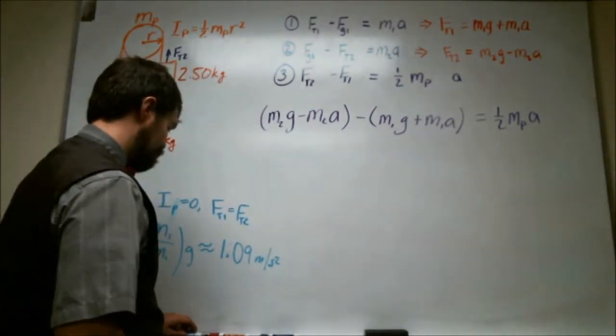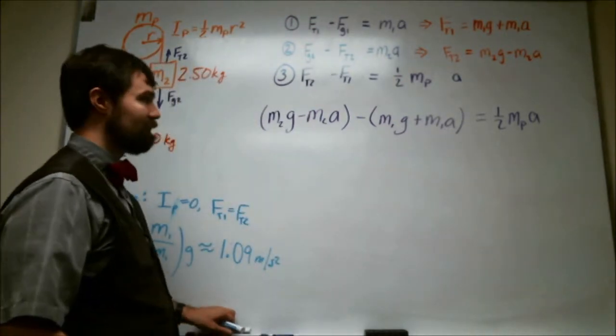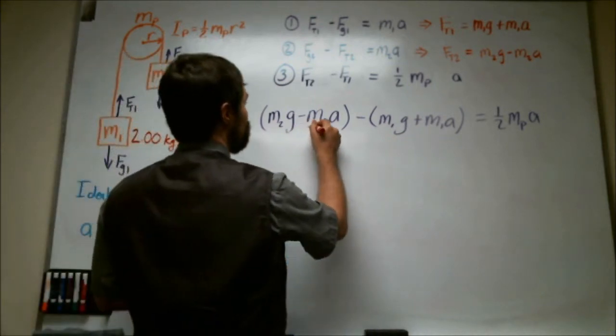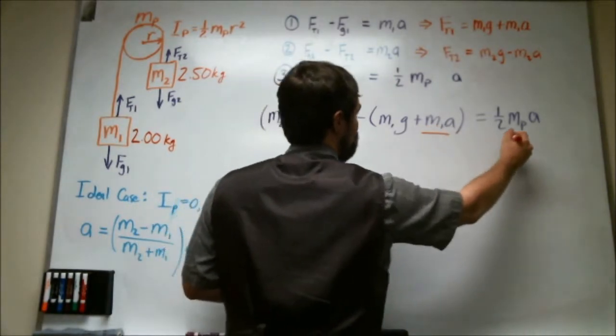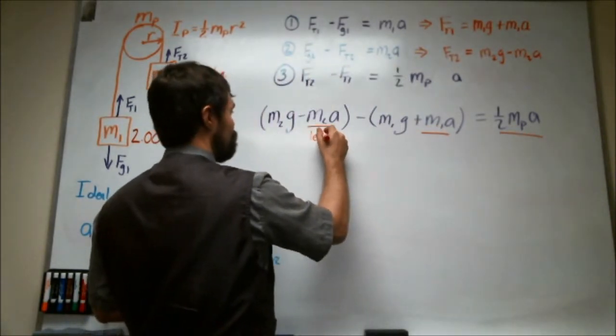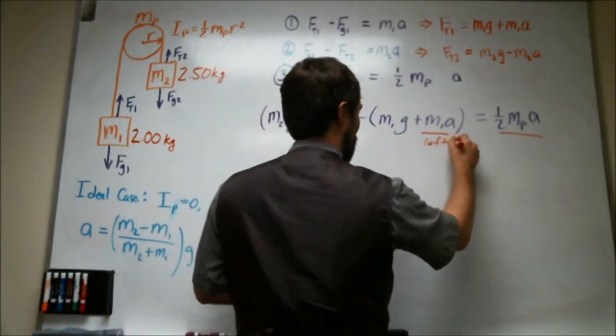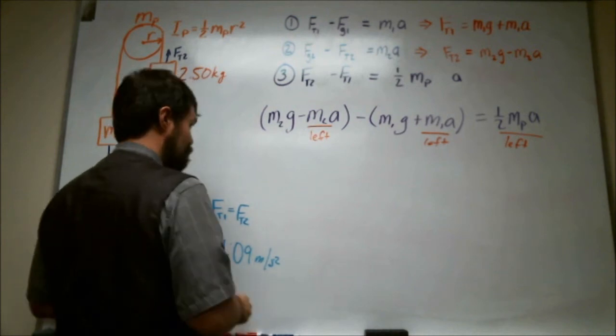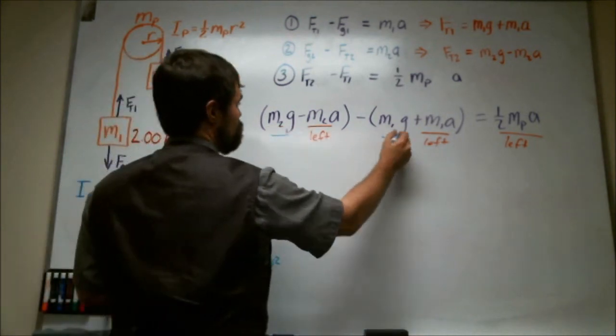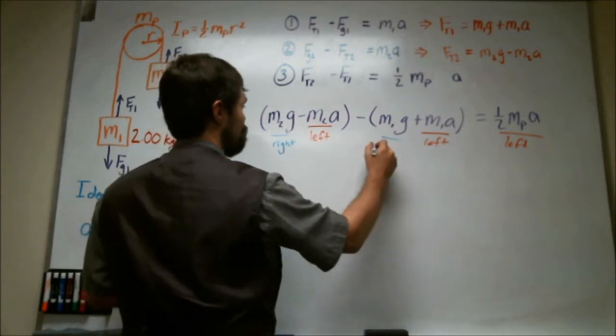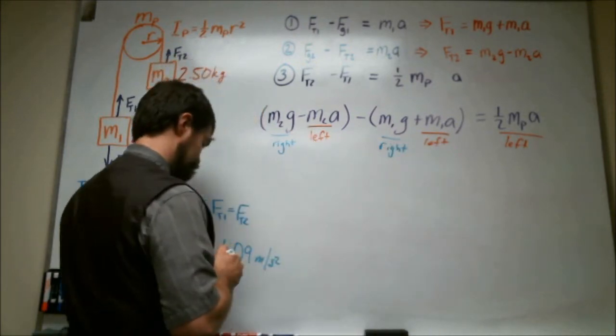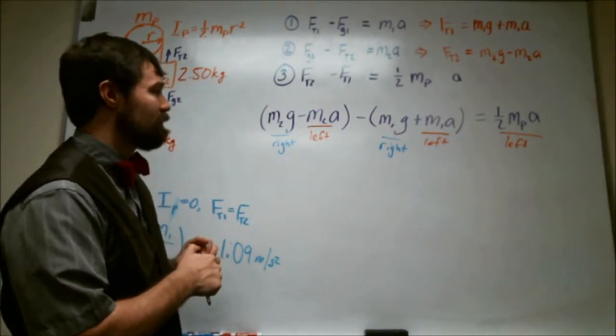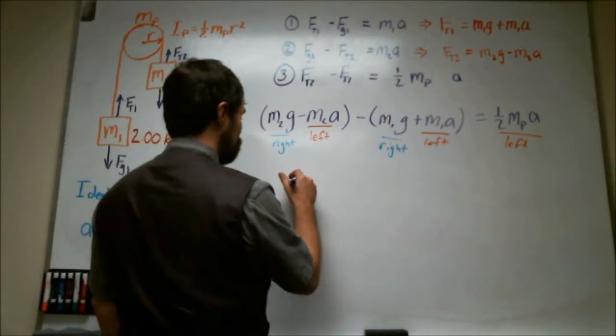So once again we need to get all of the A terms on one side and all of the G terms on the other. So this, this, and this all need to be on the left. And this term and this term need to be moved to the right. So rearranging that equation, rearranging to make that happen,